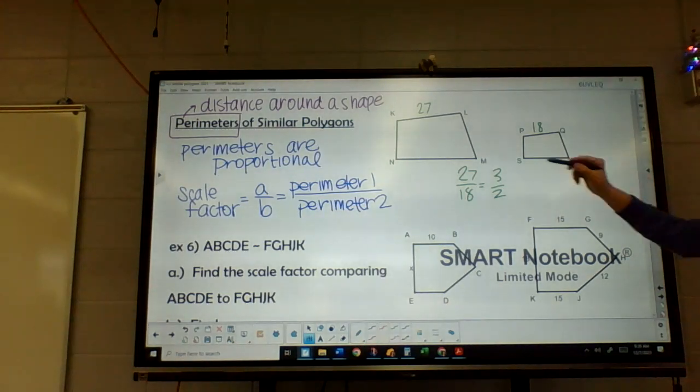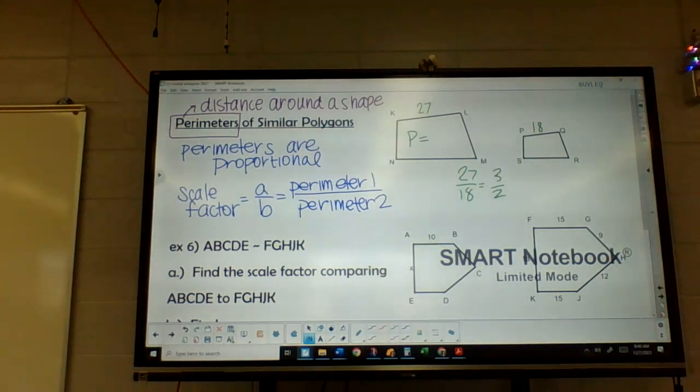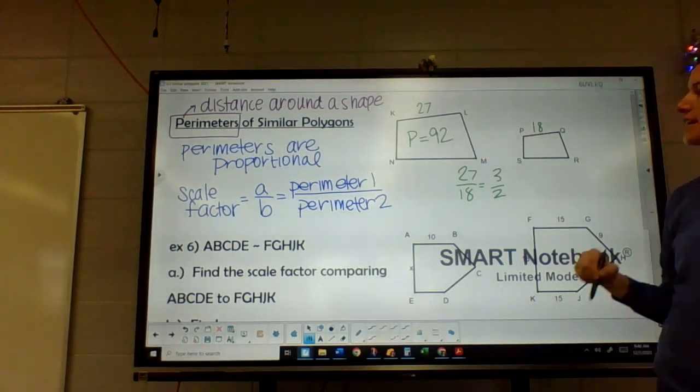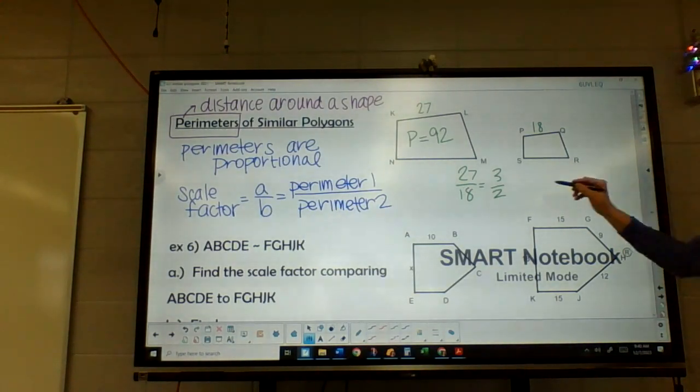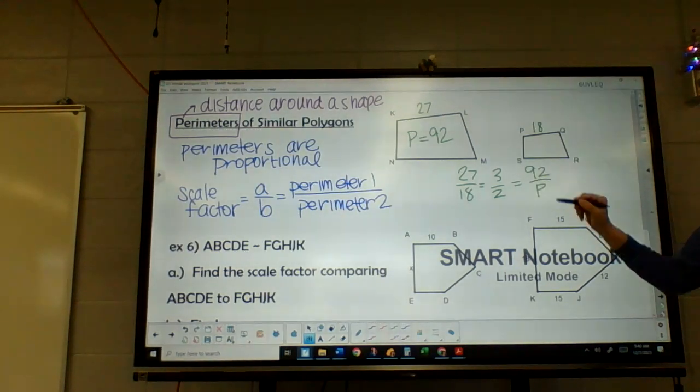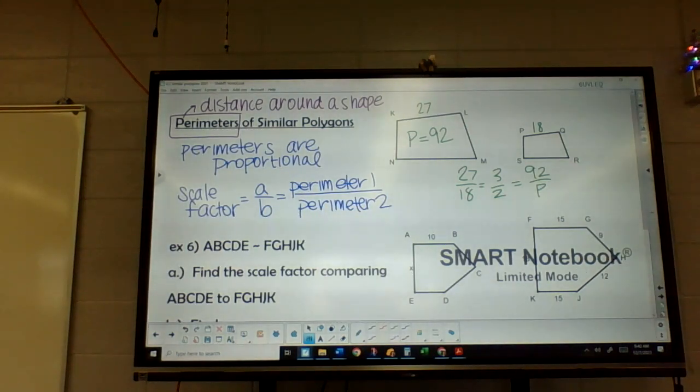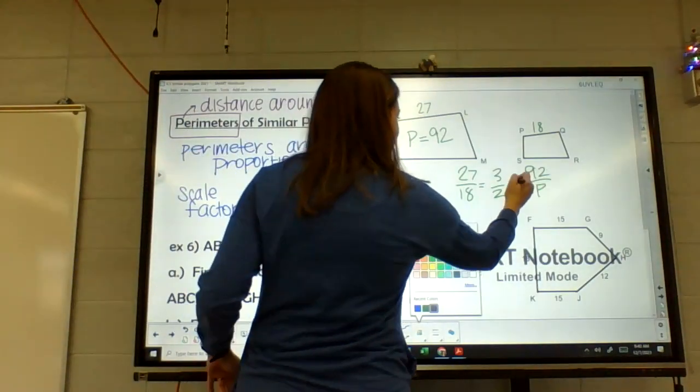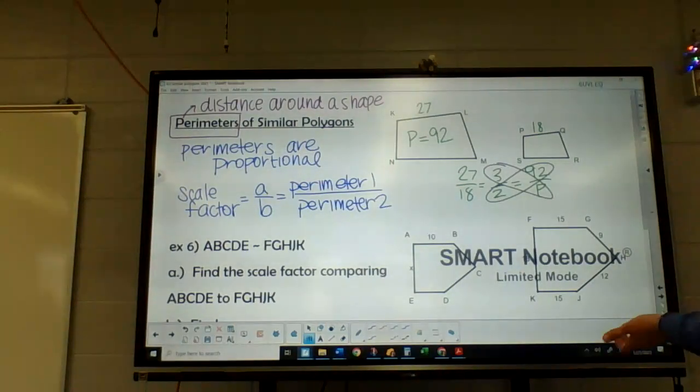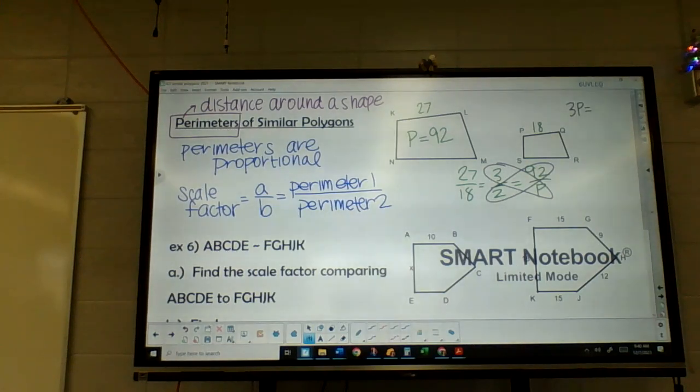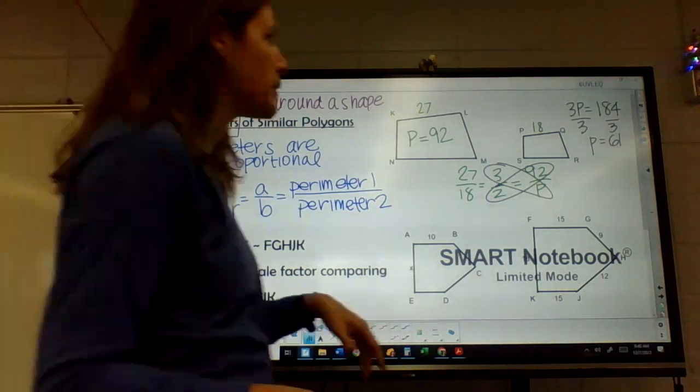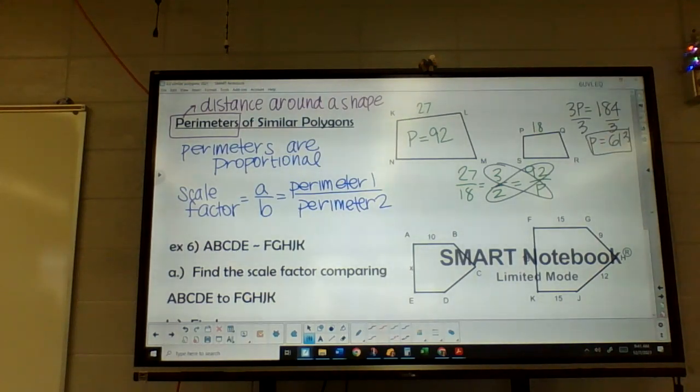Let's say then I know the perimeter of this first one. Let's call it 92. I can find the perimeter of the smaller shape by using this scale factor. So we can cross multiply. 92 times 2, so 184, we divide by 3, and it'd be like 61.3 repeating for our perimeter. So the perimeters are also proportional.